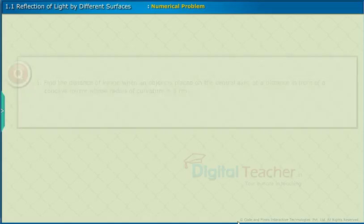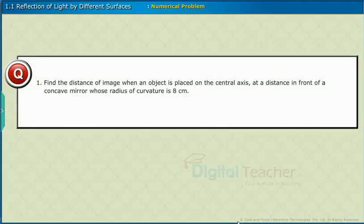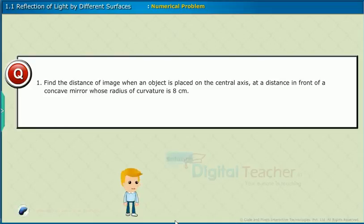Numerical problem: find the distance of the image when an object is placed on the central axis at a distance in front of a concave mirror whose radius of curvature is 8 cm. Click the tab to view the solution.